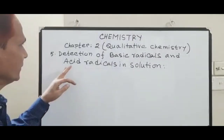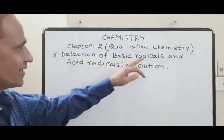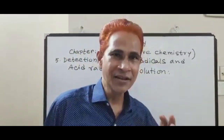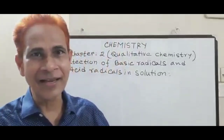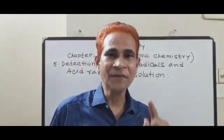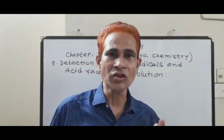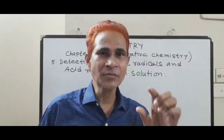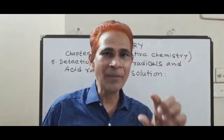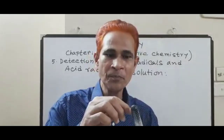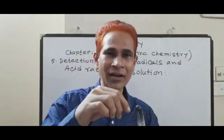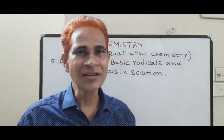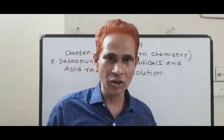Last topic: detection of basic radicals and acid radicals in solution. For the detection of basic radicals and acid radicals in solution, at first you make a stock solution. You take a small amount of sample in a test tube and dissolve it to make a stock solution, obtaining a CO₂ solution that will be the stock solution.